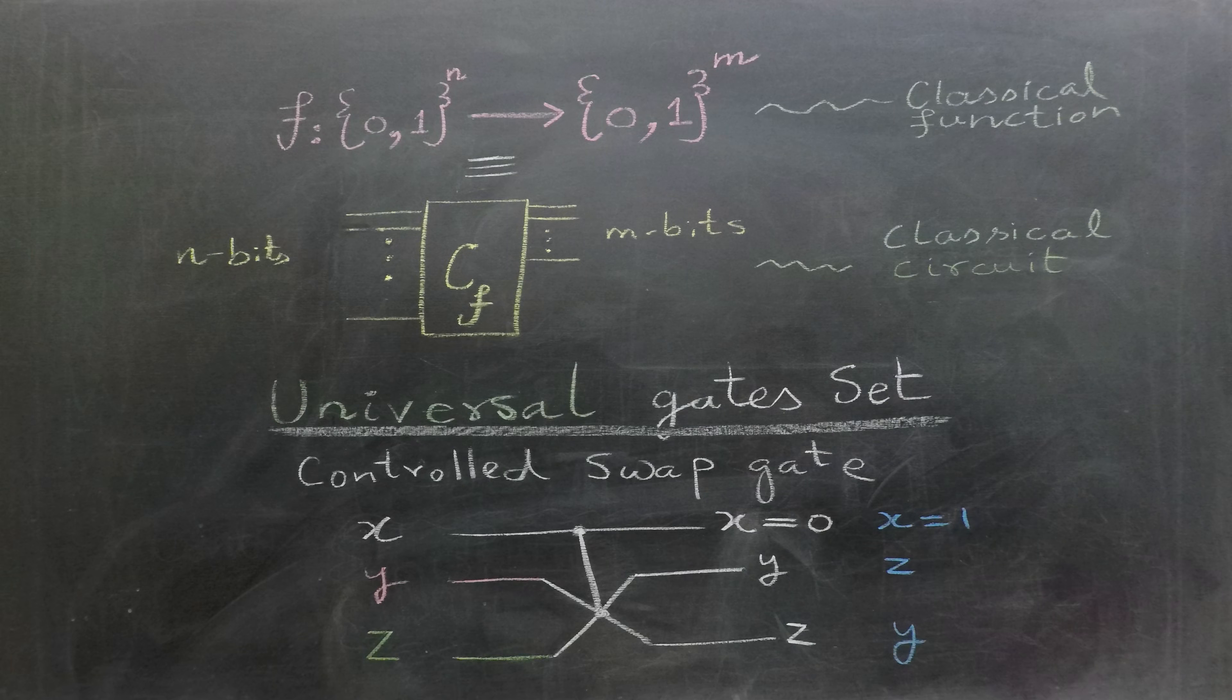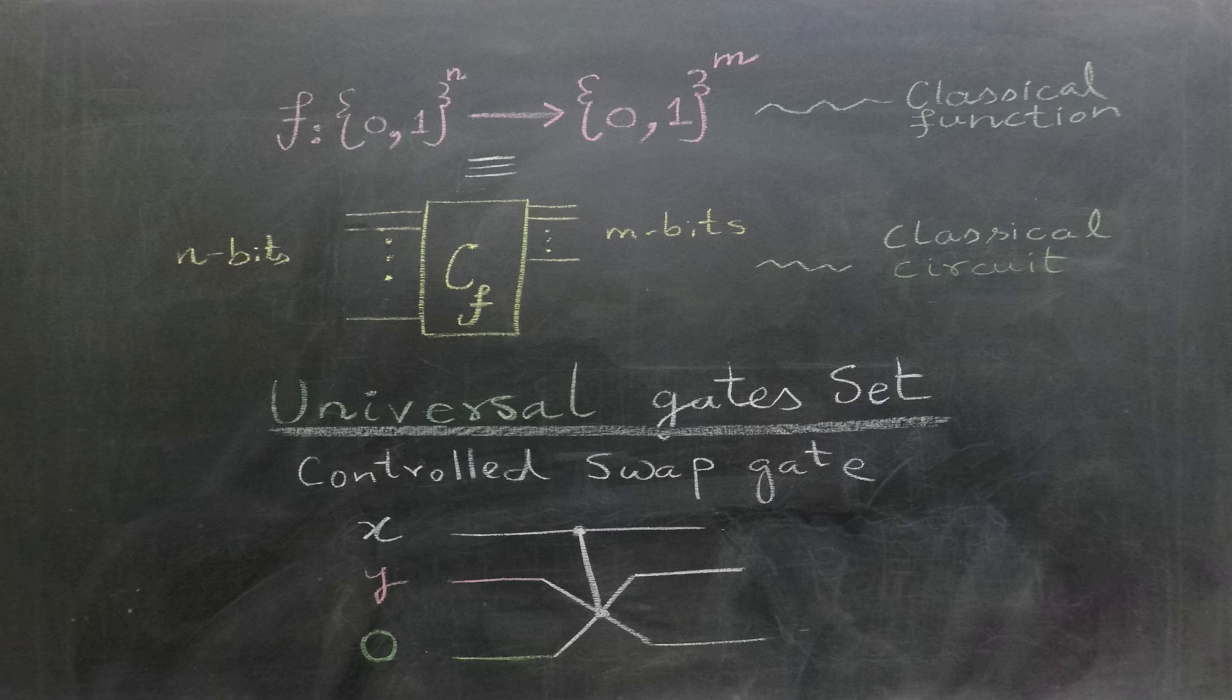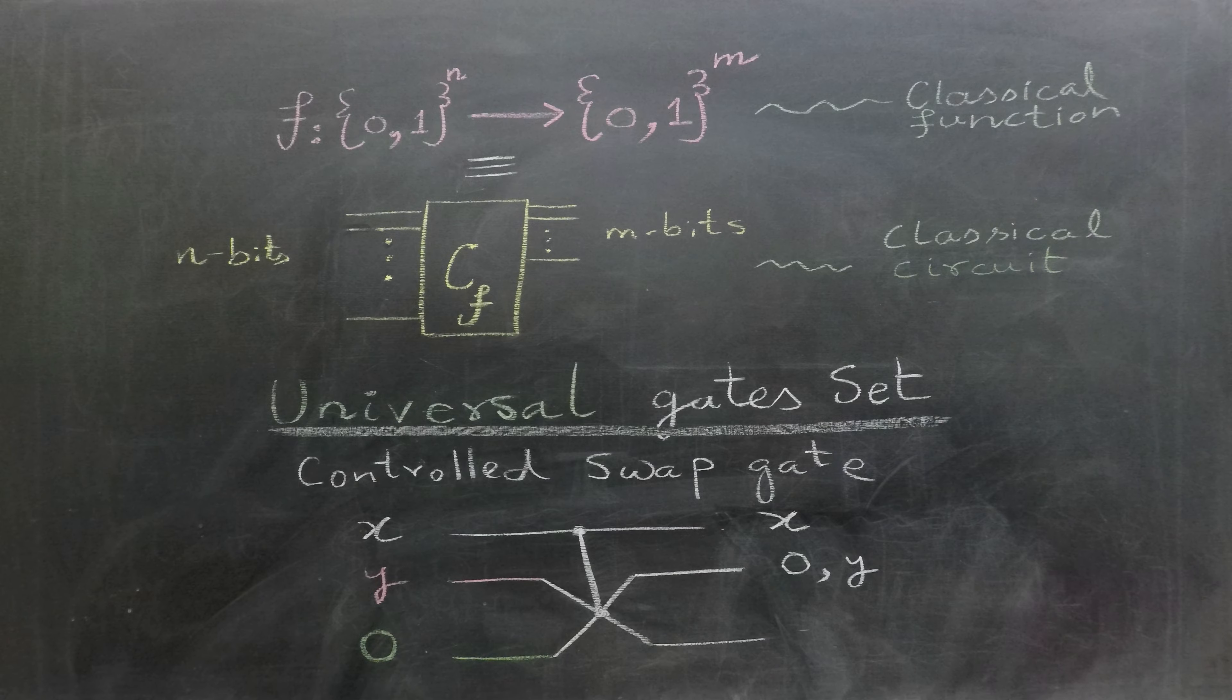Now, to create an AND gate using the controlled-swap gate, we set z equals to 0. In this case, our first output will be x. The second output will be either 0 or y depending on the value of x. Meanwhile, the last output will be the result of x and y.